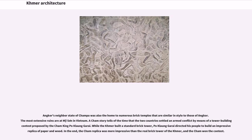Angkor's neighbor state of Champa was also home to numerous brick temples similar in style to those of Angkor; the most extensive ruins are at My Son in Vietnam. A Cham story tells of the time the two countries settled an armed conflict by means of a tower-building contest proposed by Cham king Poc Longgarai. While the Khmer built a standard brick tower, Poc Longgarai directed his people to build an impressive replica of paper and wood. In the end, the Cham replica was more impressive than the real brick tower, and the Cham won the contest.